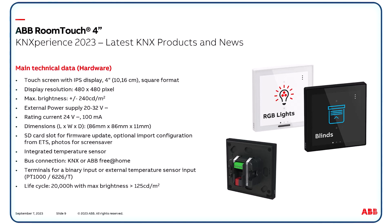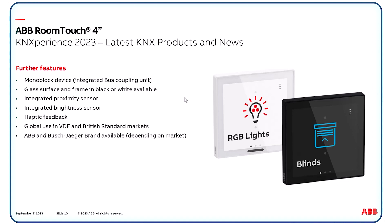We also have an ABB sensor available. On the topic of sustainability — very important — the life cycle is 20,000 hours with maximum brightness greater than 125 candela per square meter. But as the display is most of the time turned off, it can be used for a long time. The device is a monoblock, meaning it has an integrated bus coupler. The surface is made of glass, available in black or white, like the frame. There is an integrated proximity sensor for waking up the device when approaching it, an integrated brightness sensor to adapt the brightness of the display, and haptic feedback when touching the screen with vibration and sound. It is for global use in VDE and British standard markets, available under the two brands ABB and Busch-Jaeger depending on the market.